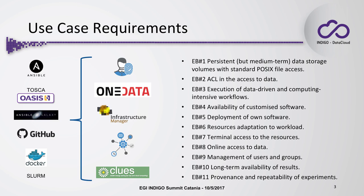We identified a set of components from INDIGO, which are basically the IAM authentication module, the OneData volumes, the Infrastructure Manager, the Orchestrator, and the Clues Elastic system. These rely on technologies like Ansible Roles, OASIS TOSCA specifications, Ansible Galaxy, GitHub and Docker Hub repositories, and Slurm queues. All these requirements are addressed by the different components identified. In this video, you will see how the Infrastructure Manager, Orchestrator, and Clues address some of these problems, along with interactions with the IAM system.